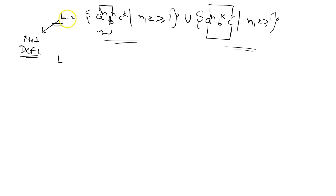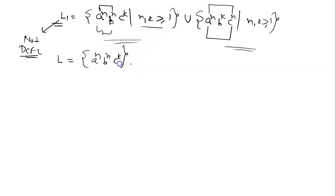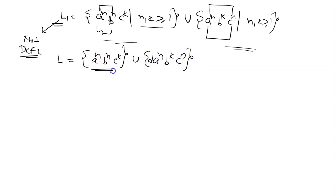Now consider another language L. I'm going to define it as: a^n b^n c^k, where n, k ≥ 1, union d a^n b^k c^n. So I am placing a 'd' marker at the start of the second part: d a^n b^k c^n.